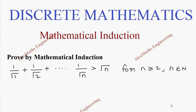Hi students, this is Alex. In this video we are going to prove by mathematical induction that 1/√1 + 1/√2 + ... + 1/√n is greater than √n for all n greater than or equal to 2, where n belongs to the natural numbers.